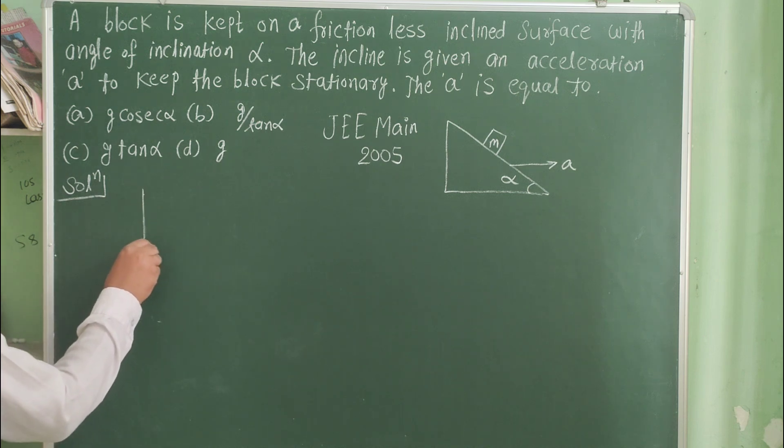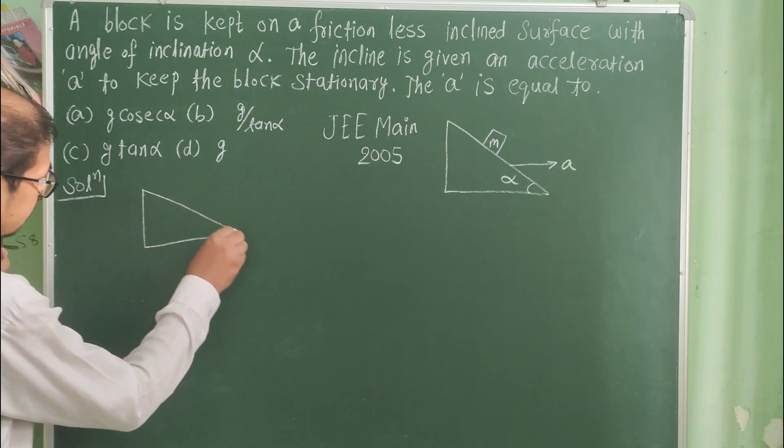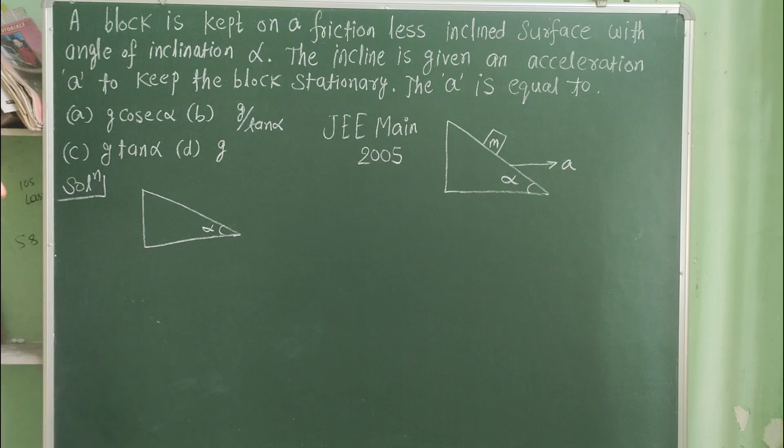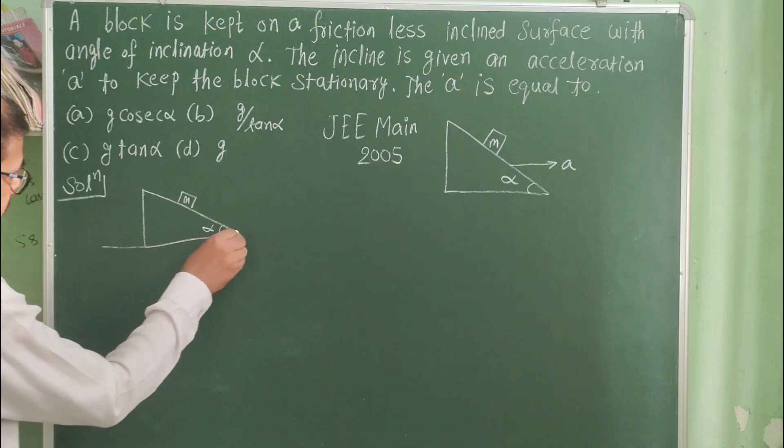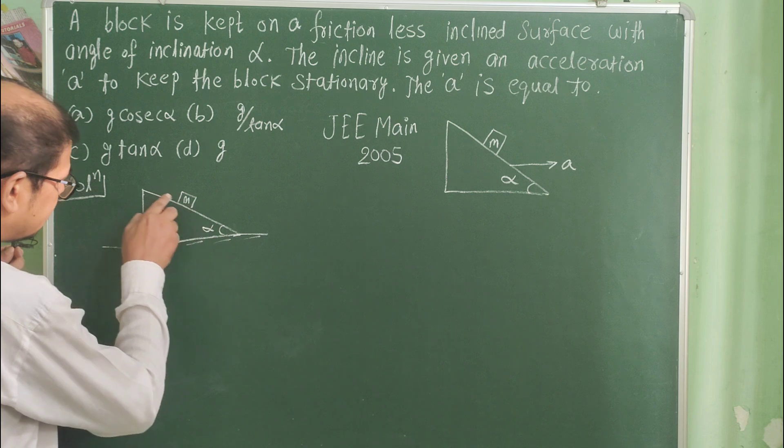This is the inclined plane. This is the angle of inclination alpha. A mass of the block. This is a smooth surface.